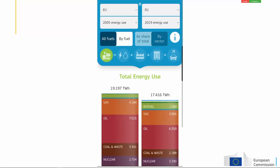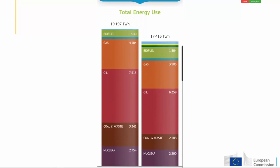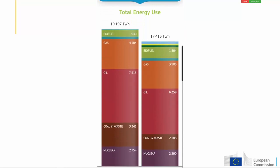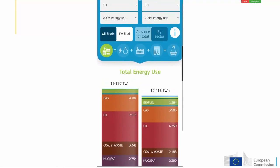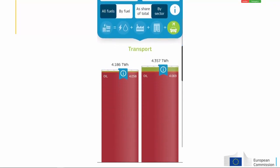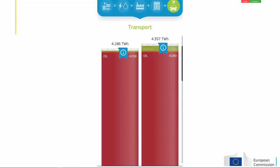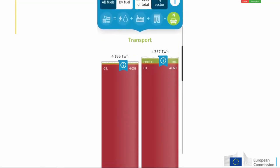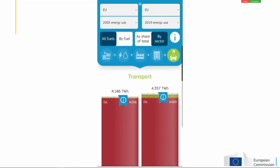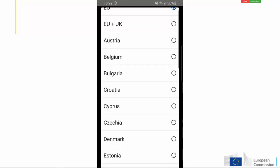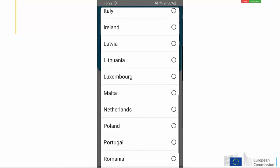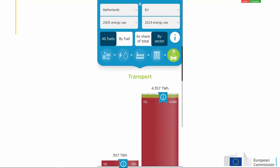We are looking at historical energy use and we see that little has changed over the last 15 years for some energy sources. Let's look at oil. Oil decreased overall — but did oil consumption also decrease in the transport sector? No, in fact there was even a small increase. Did nothing change then for transport? That's too easy — we need to go to the detail of the country level to have the answer.